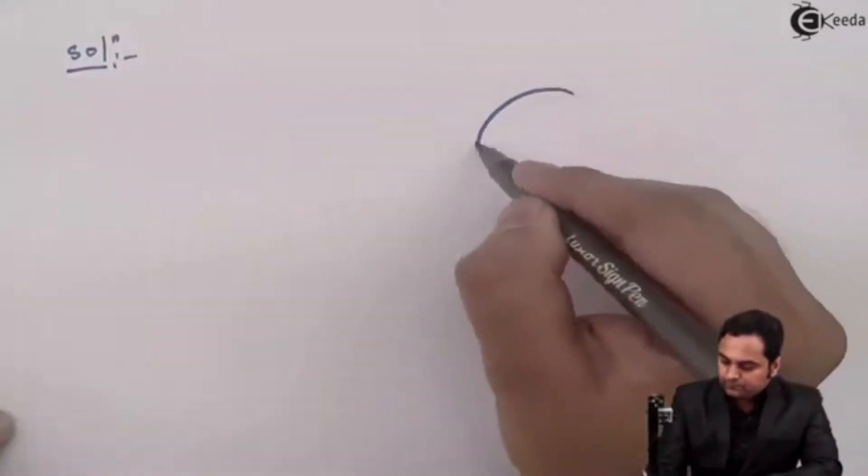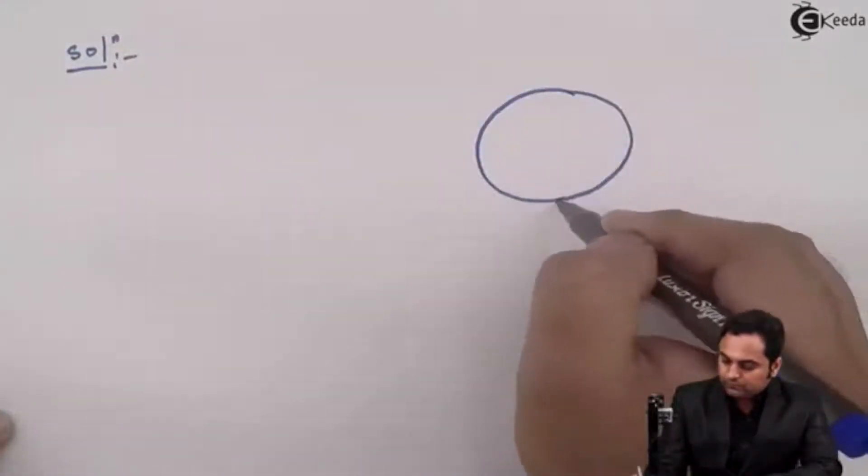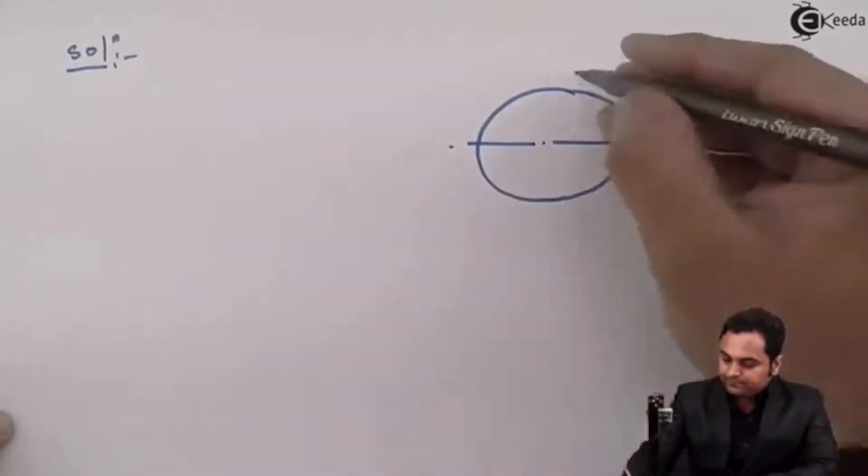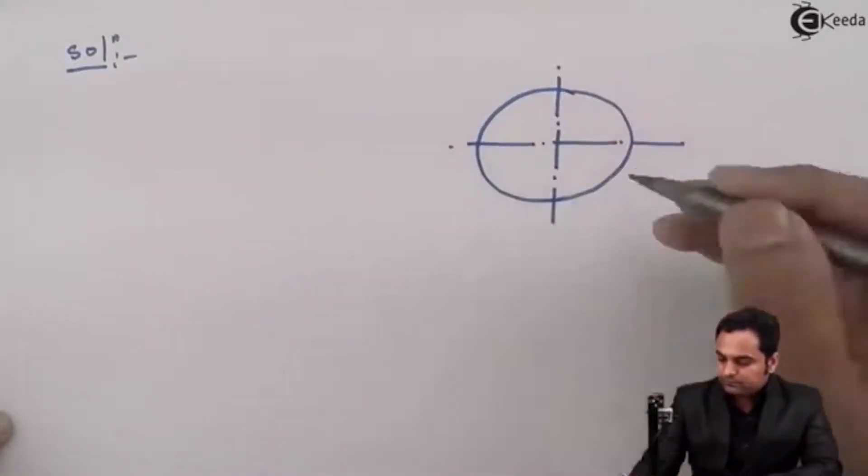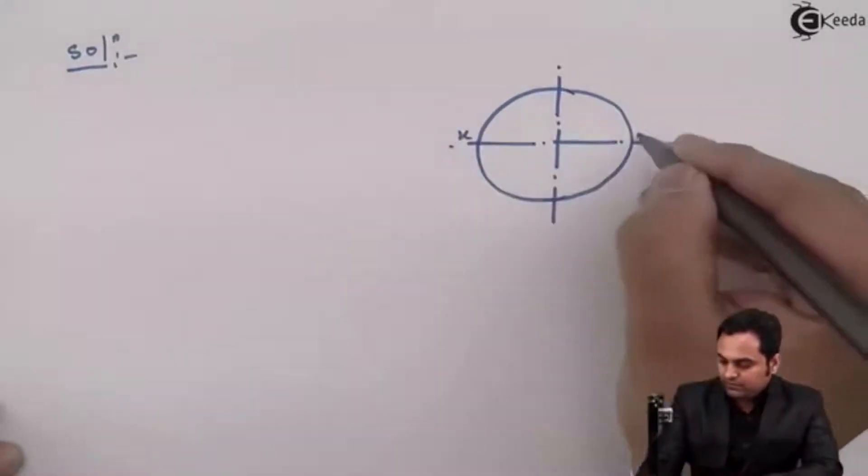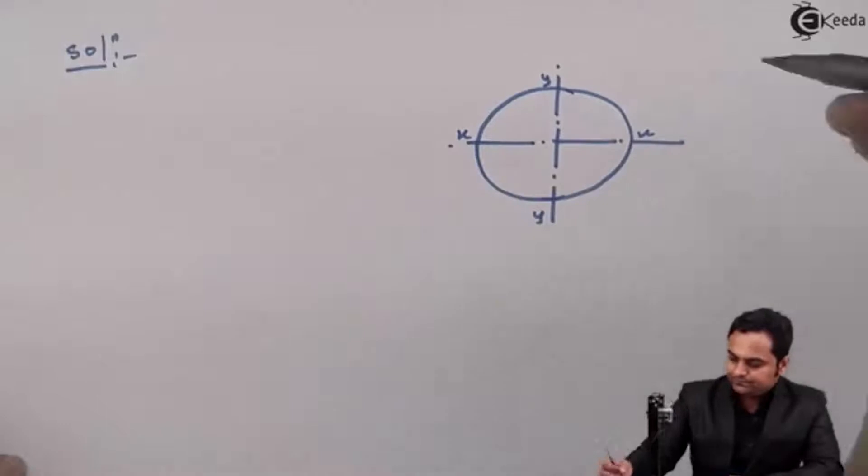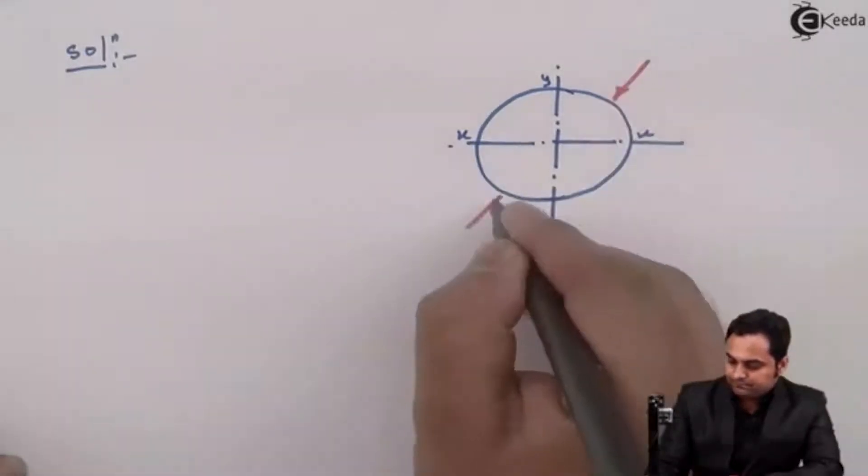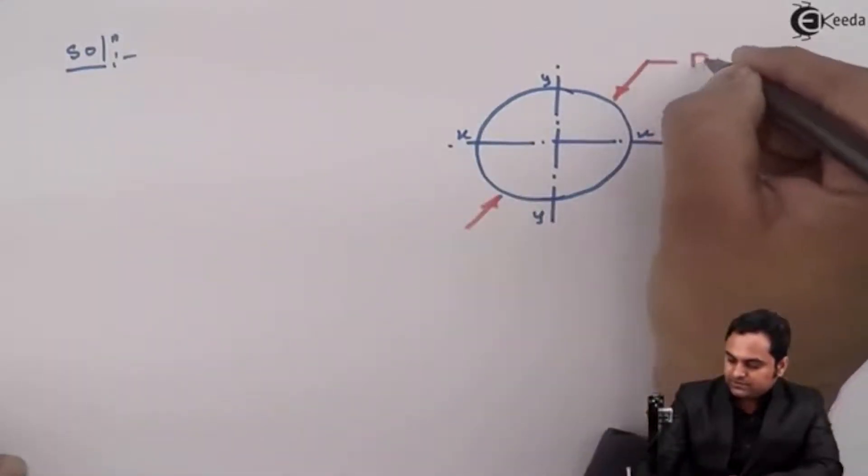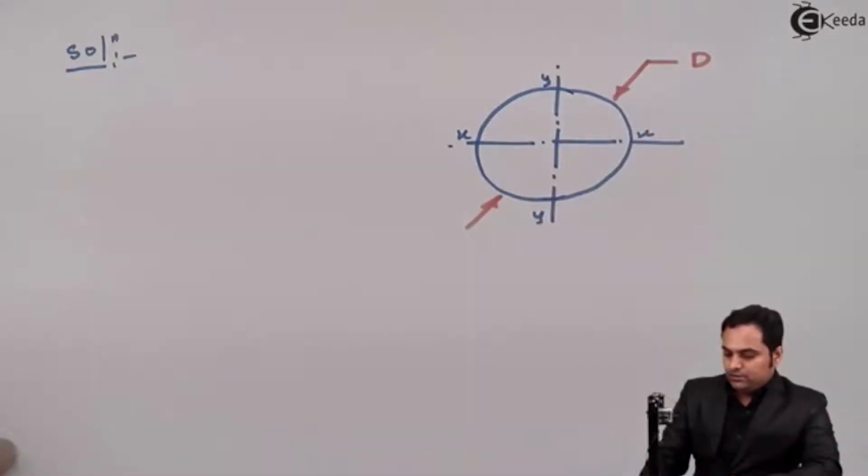In the solution part, first I'll draw the diagram. Now, here we have X axis and Y axis. This section has diameter capital D.